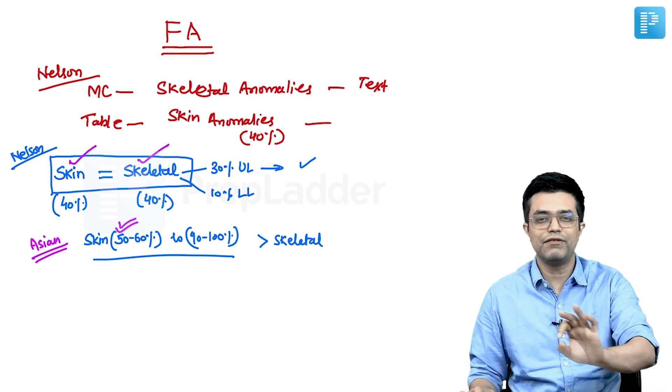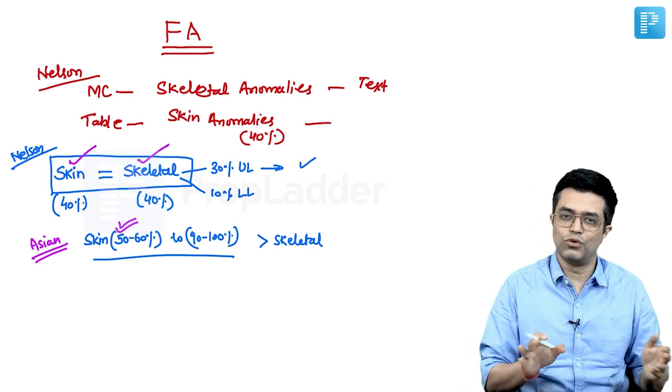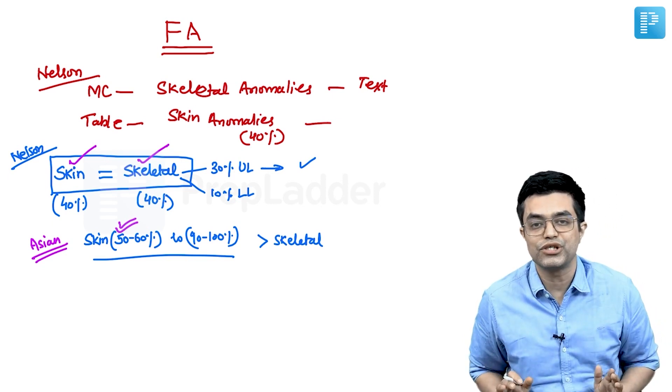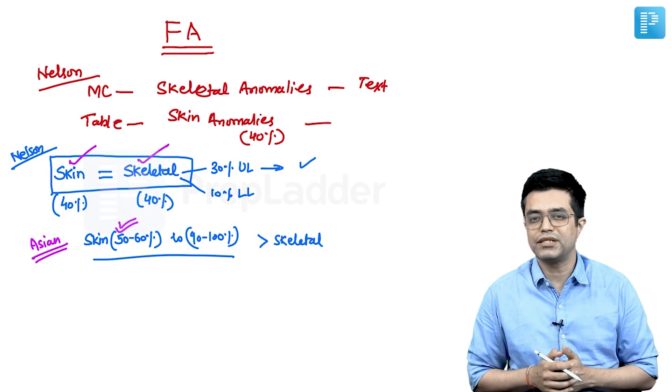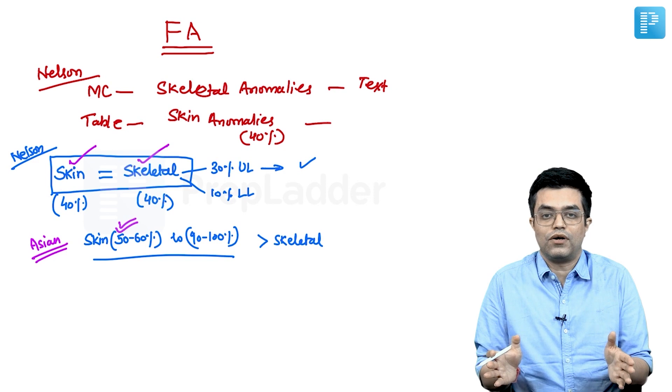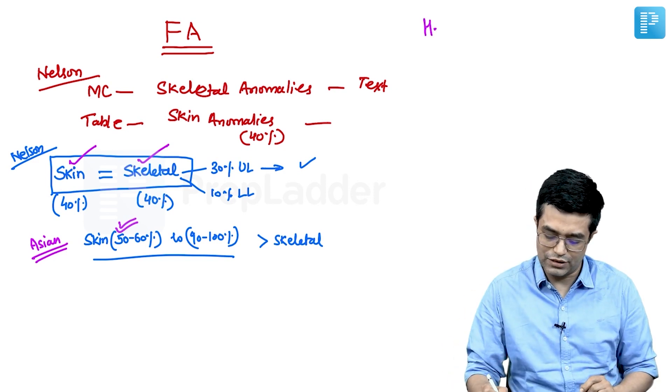One area where everybody agrees: the most important manifestation, not most common, but most important manifestation are hematological manifestations—pancytopenias or bone marrow failure. Most important or affecting prognosis will always be the hematological manifestations.